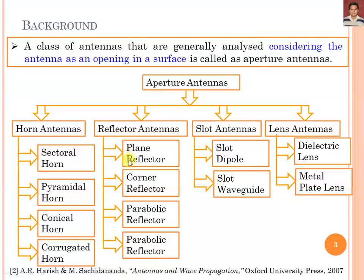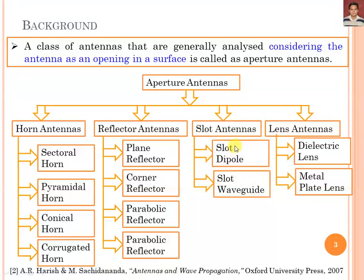Reflector Antennas can be categorised into four categories: Plane Reflector, Corner Reflector, Parabolic Reflector, and Spherical Reflector. The third category is the Slot Antenna, which can be categorised into Slot Dipole and Slot Waveguide — these are the two main categories. The fourth category is the Lens Antenna, which includes the Dielectric Lens and Metal Plate Lens.